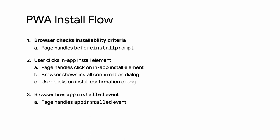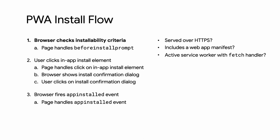First, the browser checks to see if the page meets the installability criteria. Is it served over HTTPS? Does it have a web app manifest with the required fields? Does it have a service worker with a fetch event handler? Has it met the user engagement heuristics — essentially, has the user interacted with the page at least a little bit? And it makes sure that the PWA isn't already installed.